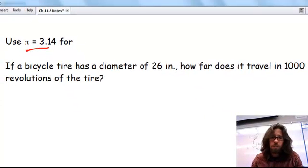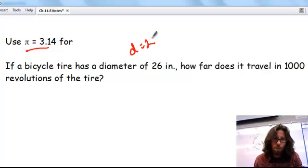If a bicycle tire has a diameter of 26 inches, so I now know that my diameter is equal to 26 inches, how far does it travel in 1,000 revolutions of the tire?